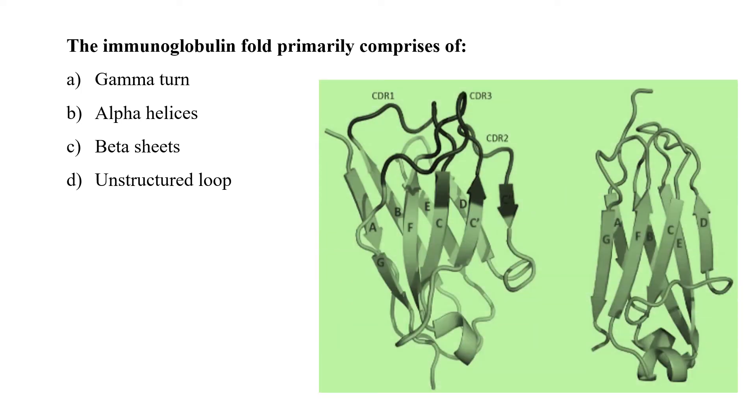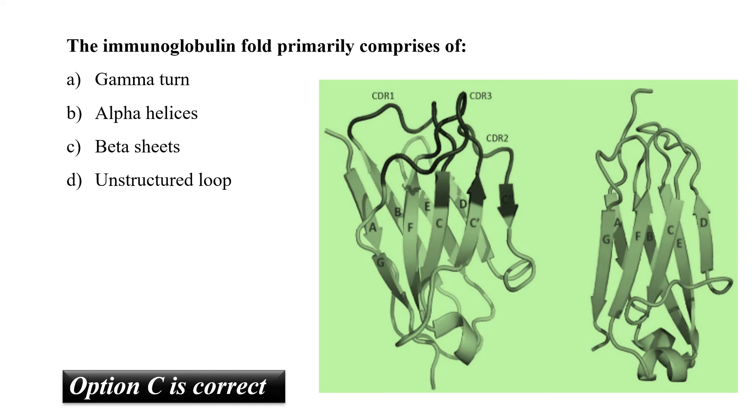The immunoglobulin fold primarily comprises of gamma-turn, alpha-helices, beta sheets, or unstructured loop. Immunoglobulin fold consists of a pair of beta sheets, each built of anti-parallel beta strands that surrounds a central hydrophobic core that is bridged by a single disulfide bond. So option C would be the correct answer that beta sheets are responsible for making the immunoglobulin fold.